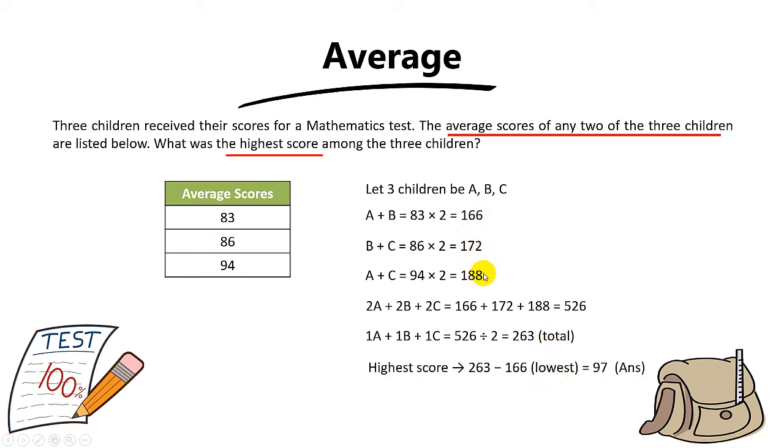Do you know the reason? If you want to find the highest score, the other two children must be the lowest score, and we know that lowest score is 166. So to find the highest score, you take 263 minus 166, the answer is 97.